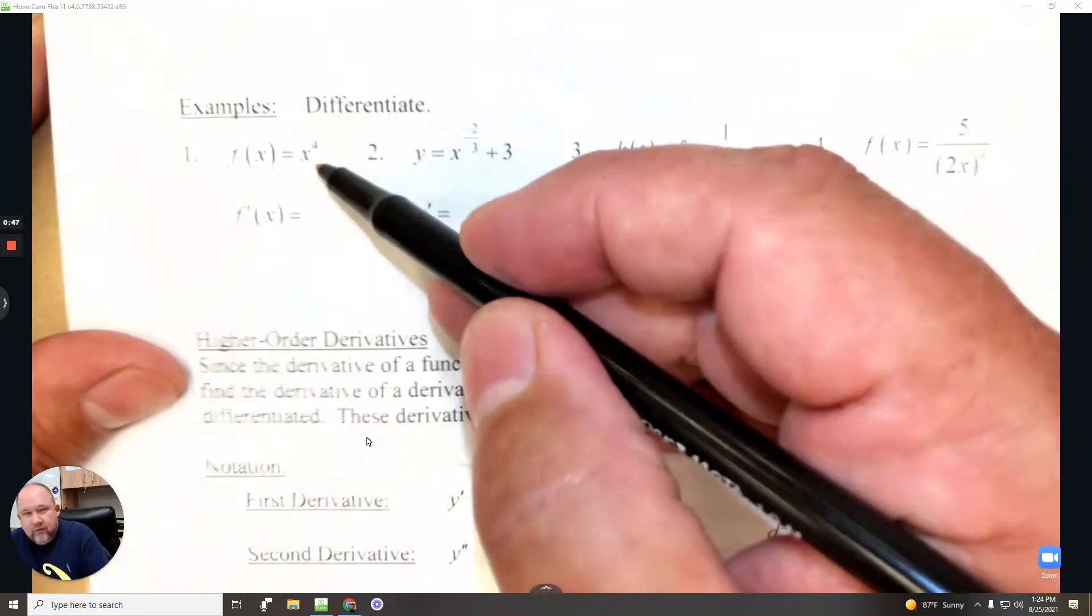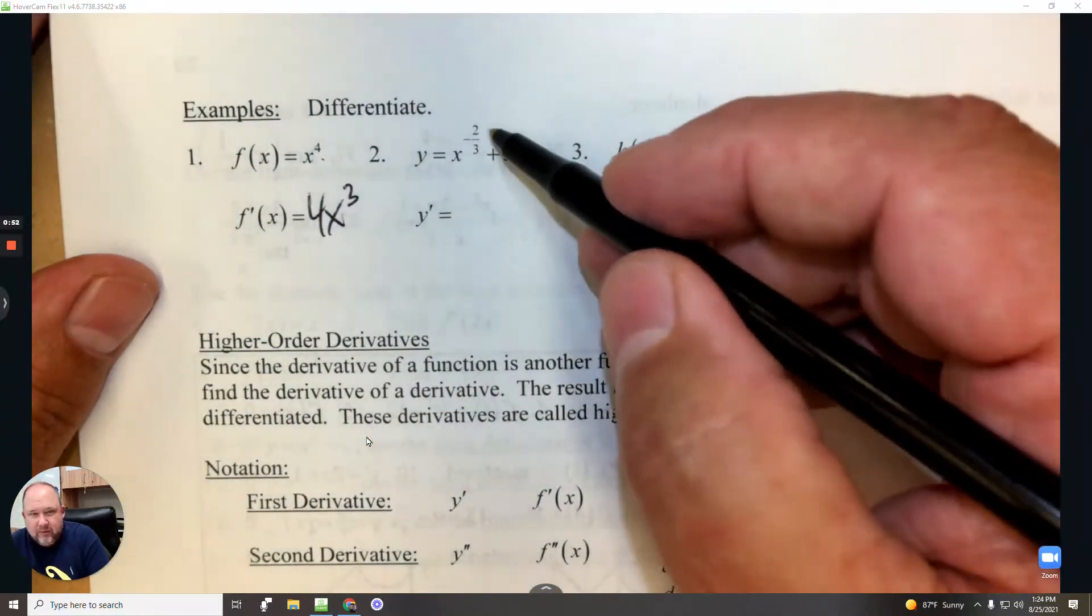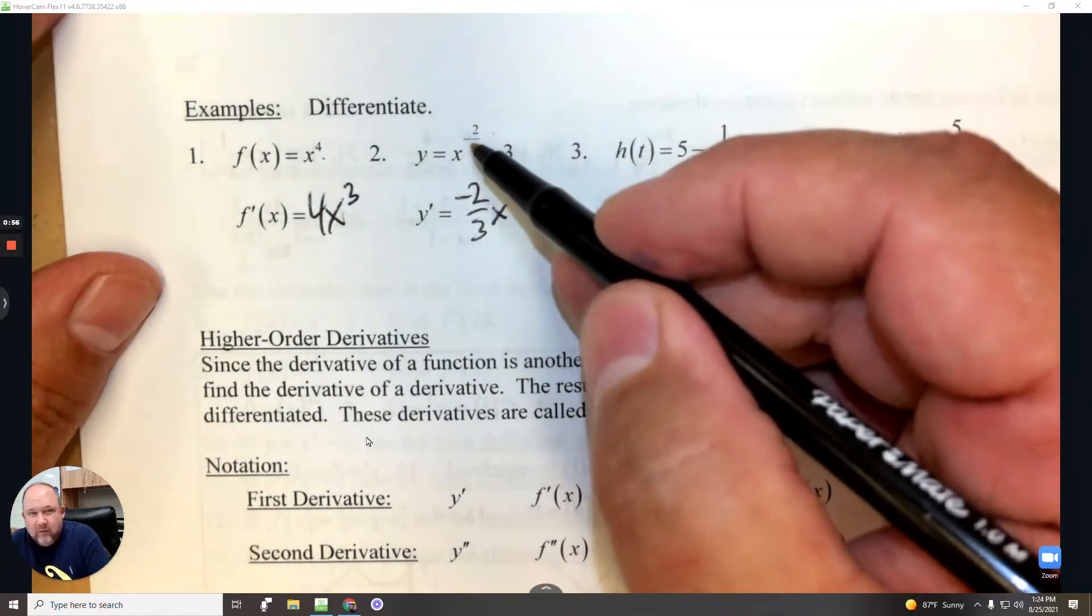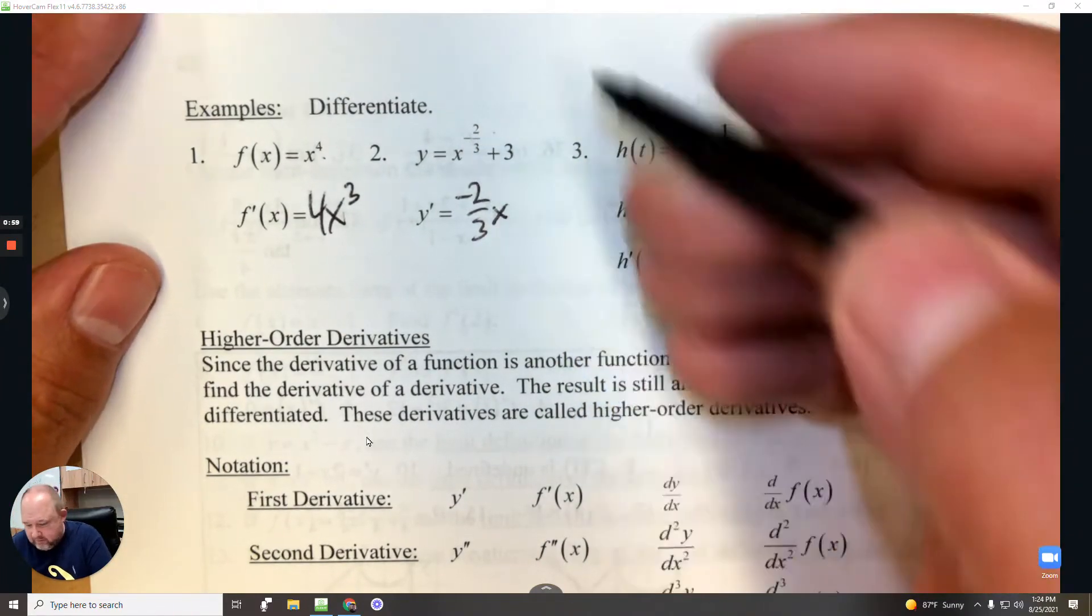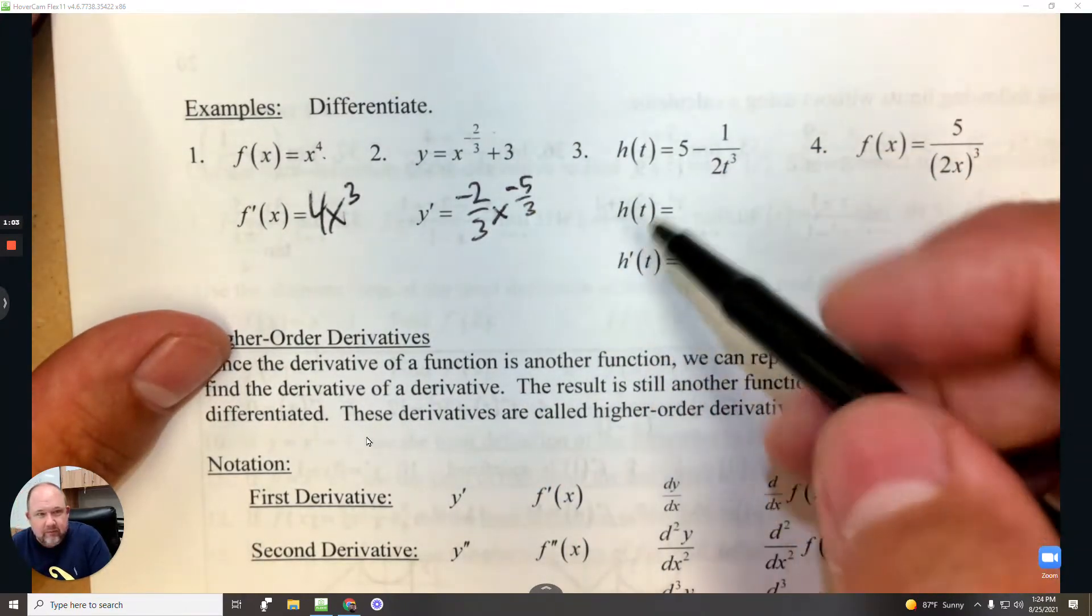Using shortcuts, the derivative here is 4x cubed. Subtract 1 to the exponent: negative 2 thirds x. When you subtract 1, that's negative 2 take away 3, that's negative 5 thirds, and the derivative of 3 is 0.